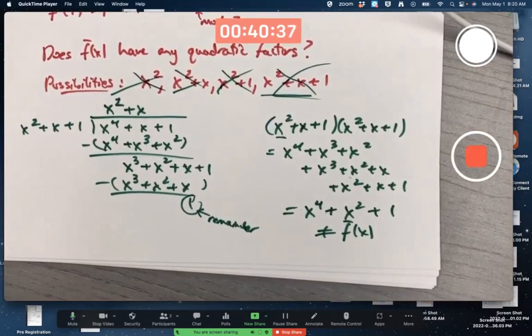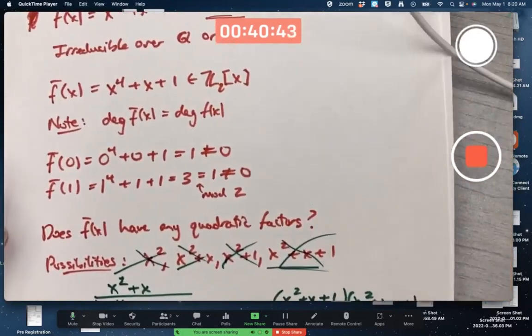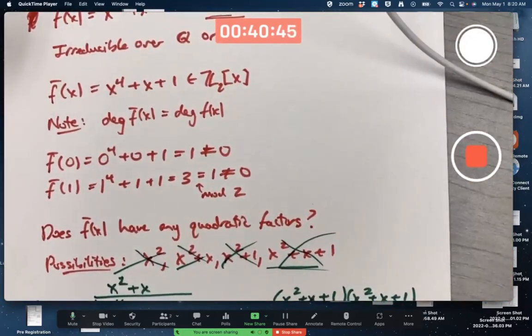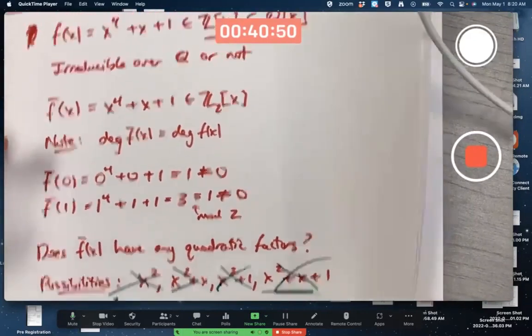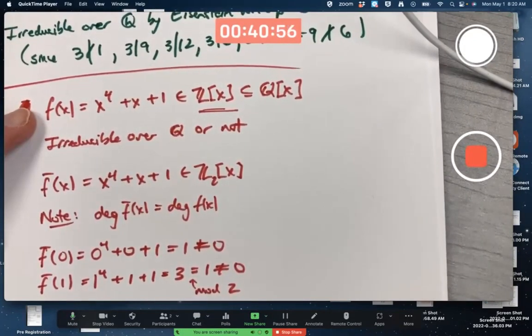So a couple ways of verifying that this is not a possibility either. Our original polynomial f bar of x in Z_2[x] has no linear factors, no cubic factors, no quadratic factors. Those are the only possibilities to think about. But it is therefore irreducible over Z_2. And therefore, by the mod p irreducibility test with p equal to 2, the original polynomial is irreducible over the rationals.